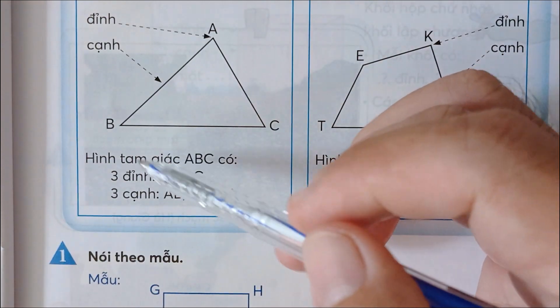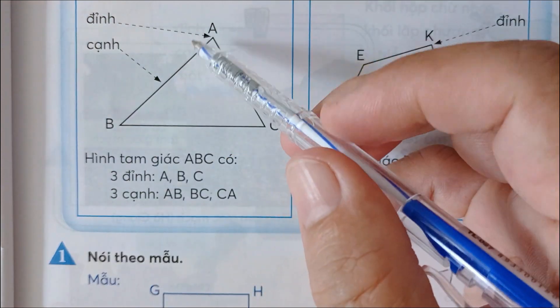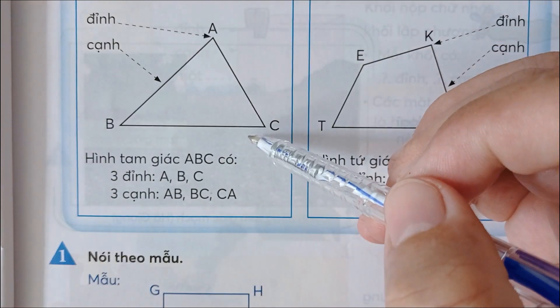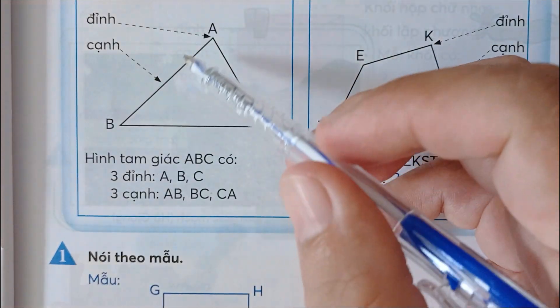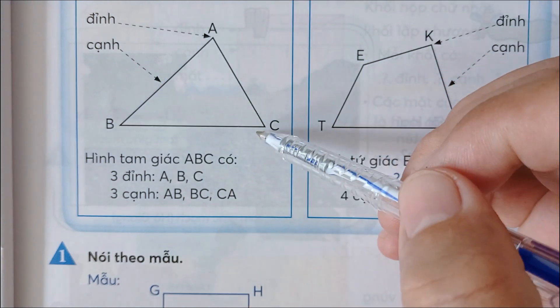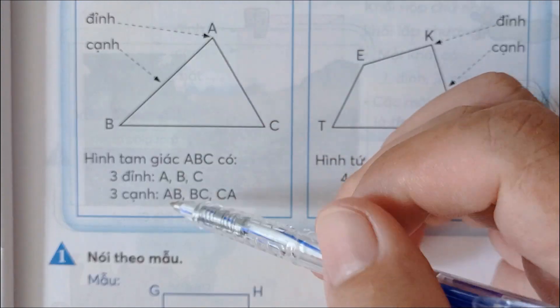Hình tam giác A, B, C có 3 đỉnh là A, B, C.